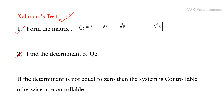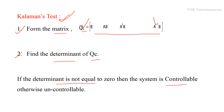In the first step, we determine the controllability test matrix QC using the standard formula, where n represents the number of state variables. In the second step, we determine the determinant of QC. If the determinant is not equal to zero, the system is controllable; otherwise, it is uncontrollable. By using these two steps, we determine whether the given system is controllable or not.